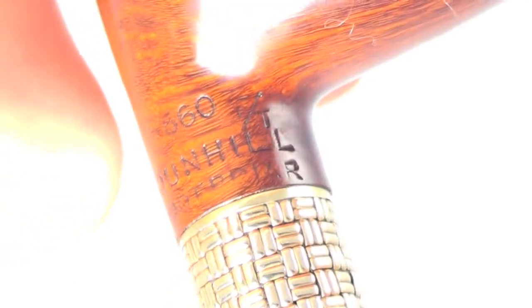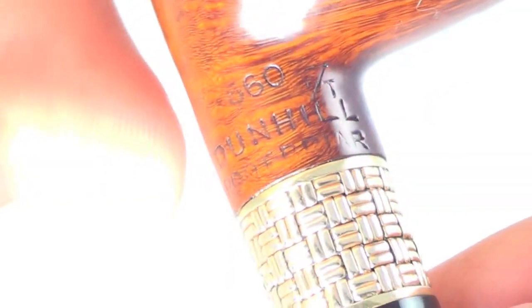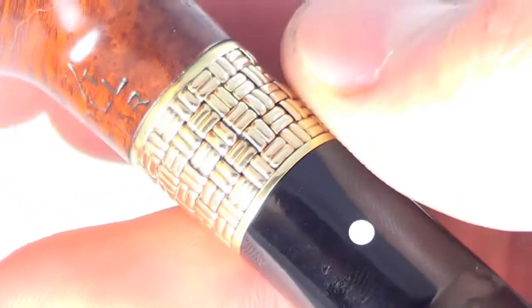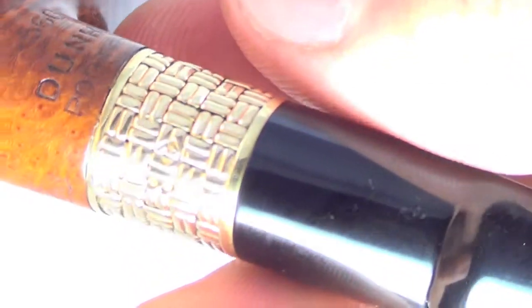The pipe is marked 660 Dunhill root briar FT, 4R made in England 12 on the other side.